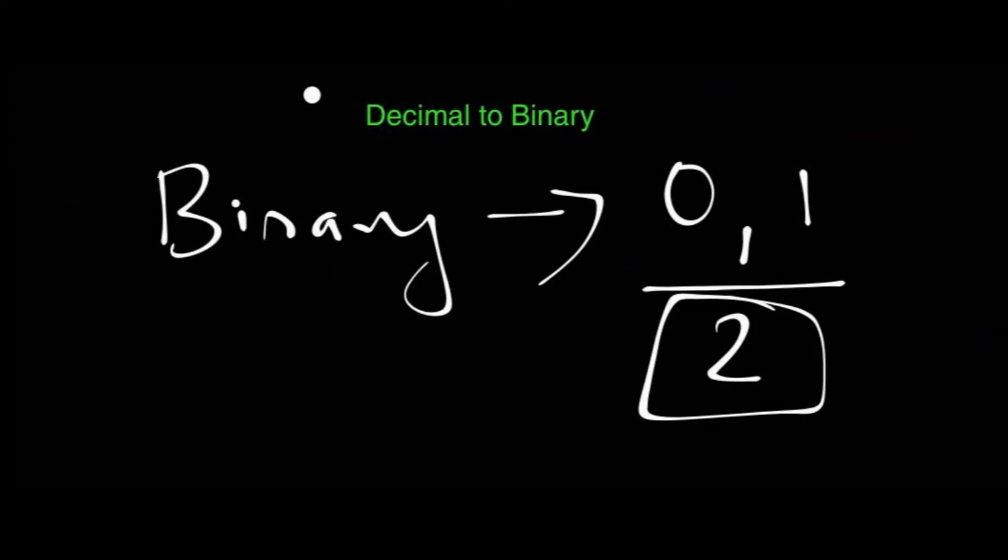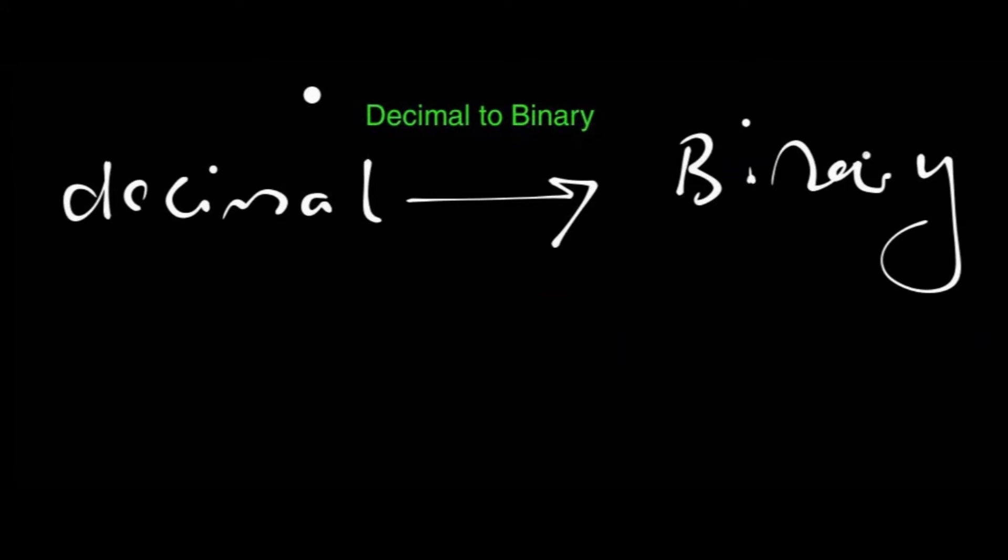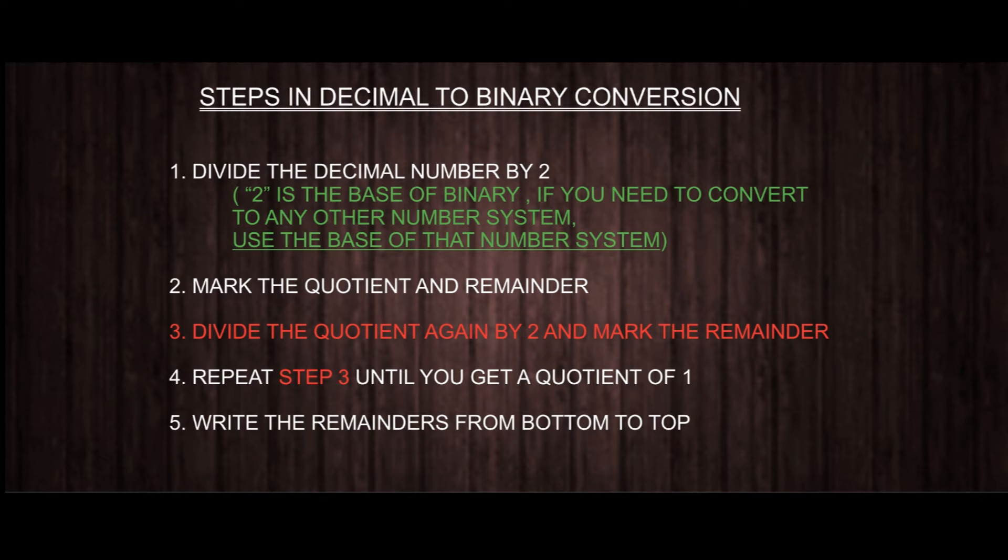So let's talk about conversion. In order to convert a decimal number to binary, you just need to divide that number by 2, the base of the number system. Then mark the quotient and the remainder. Again, divide the quotient by 2 and mark the remainder. Repeat this step until you get a quotient of 1 or rarely 0.